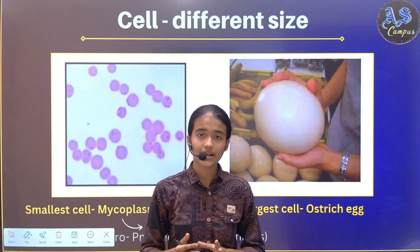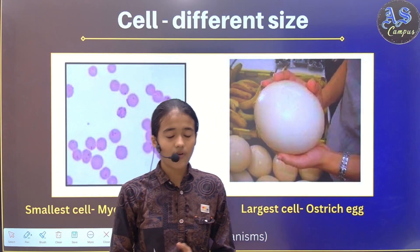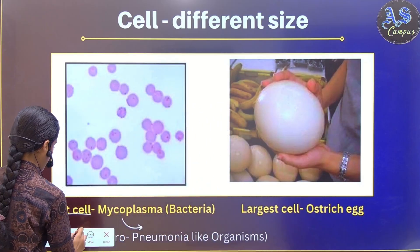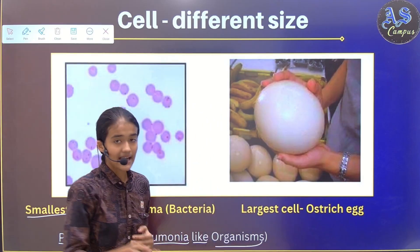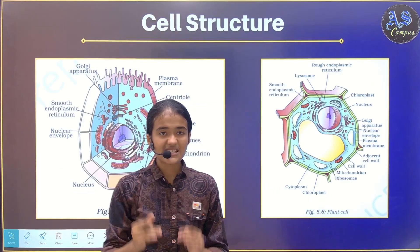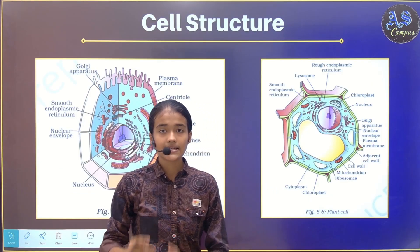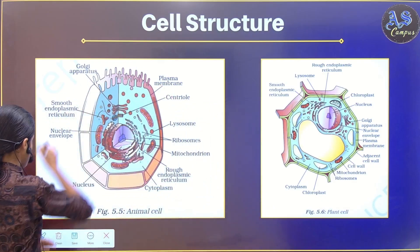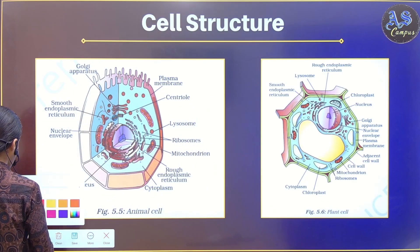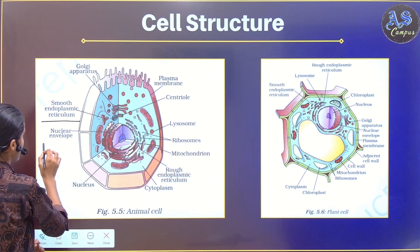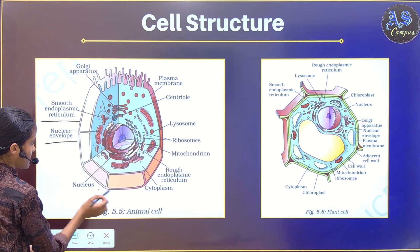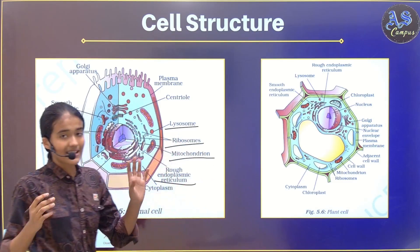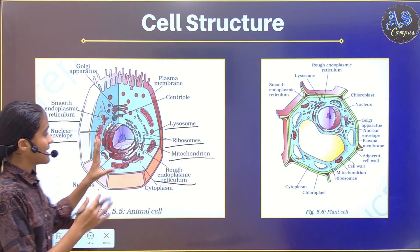We are going to discuss different kinds of cells on the basis of their size. The smallest cell is mycoplasma and the largest cell is the ostrich egg. The basic structure of a cell includes the cell membrane, nucleus, and cytoplasm. You can also see other components of a cell like smooth endoplasmic reticulum, nuclear envelope, rough endoplasmic reticulum, mitochondrion, ribosomes, lysosomes, etc., in both animal and plant cells.